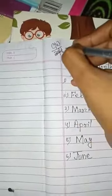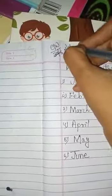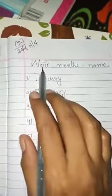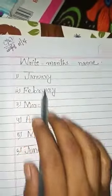In last class we have done month's name. So today, write today's date — this is the last previous one, so write 'one seven' for last work. Then again write the heading 'Month's Name,' and then write: January, February.